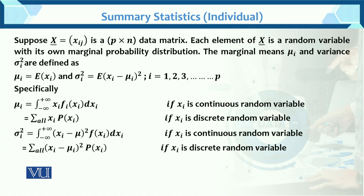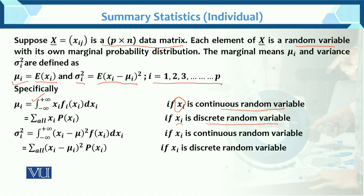The summary statistics involve a p×n data matrix where each element of x is a random variable with its own marginal probability distribution. In the univariate case, mu_i (for the i-th variable) equals the expected value of x_i, and sigma_i squared equals the expected value of (x_i minus mu_i) squared, where i varies from 1 to p. If x_i is continuous, use the integral; if discrete, use summation.